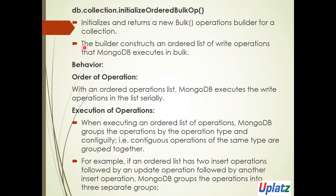The first method in bulk operation is db.collection.initializeOrderedBulkOp. It returns the bulk operation to our collection. Since the method name has 'ordered,' it will order the list of write operations that MongoDB executes in bulk. Ordered means it will wait for the previous operation to complete and then start the next operation.